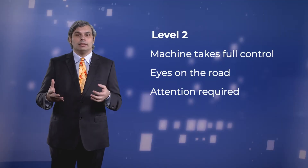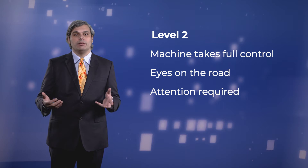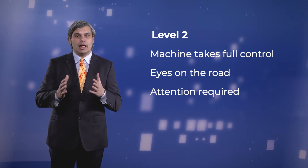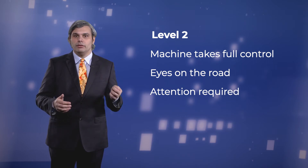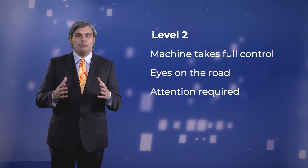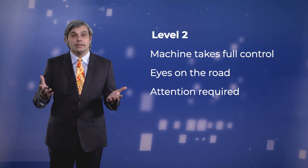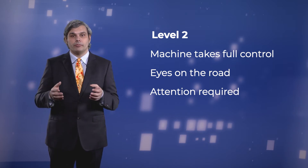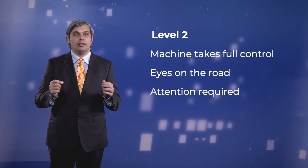In level 2 cars, the machine can take full control of the vehicle, for both steering and acceleration. These cars already exist. Level 2 cars can drive along a lane by themselves. They may still require confirmation from the user in some cases, for example, when to initiate a lane change. At level 2, there are two drivers, a human driver and a machine driver, and they alternate. The human must be able and ready to take back control at any time.